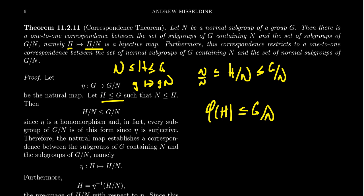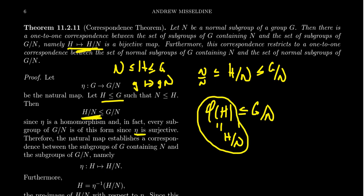But what is η(H)? Because H contains N, this is just H mod N — that's what we want to convince ourselves of. H mod N is a subgroup of G mod N, and since η is surjective, every subgroup of G mod N is of this form. Therefore the natural map establishes a correspondence between the subgroups of G containing N and the subgroups of G mod N.